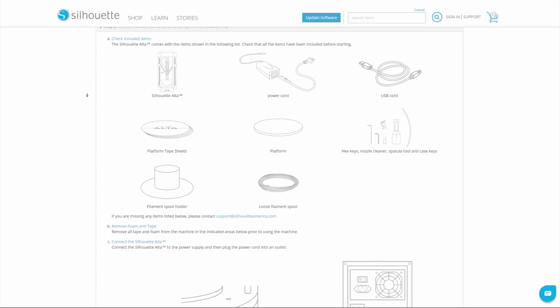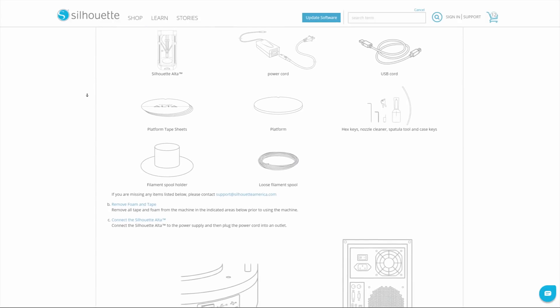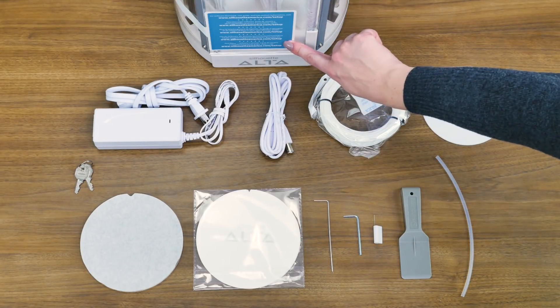Check the box contents and set up the Silhouette Alta. Once your machine has been registered, check to make sure that you have all of the items that should be in the box.